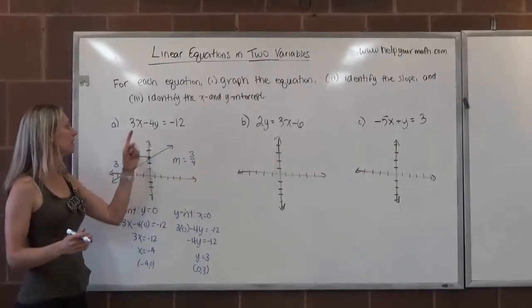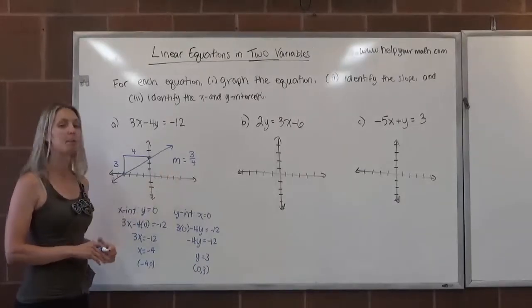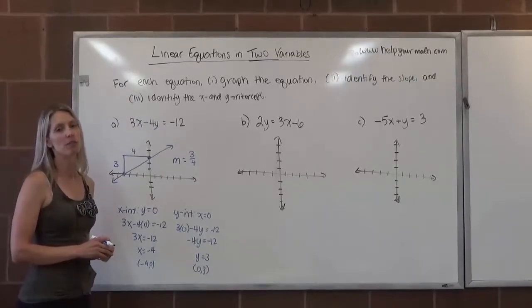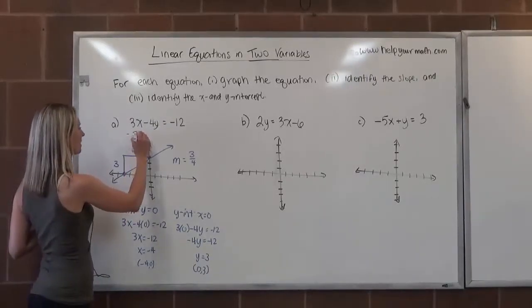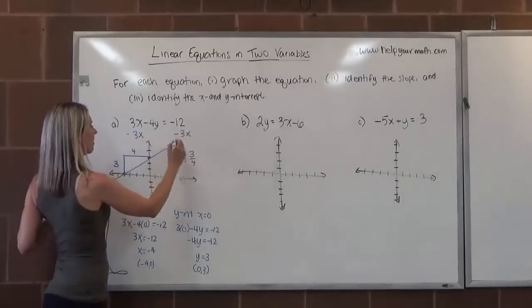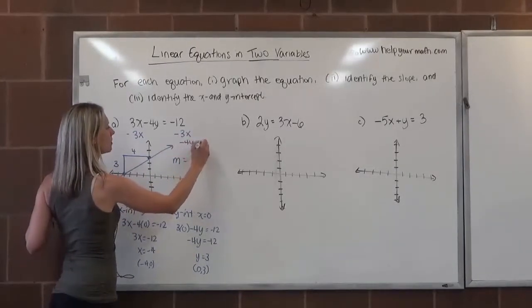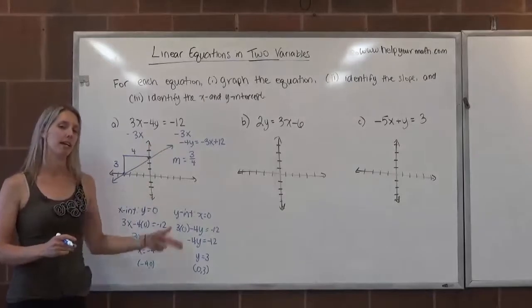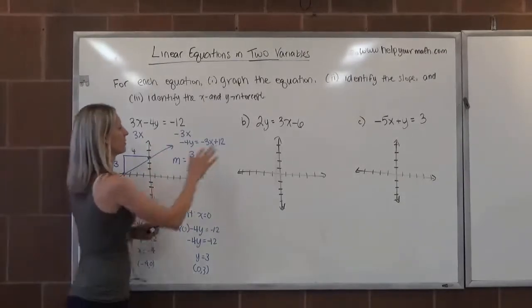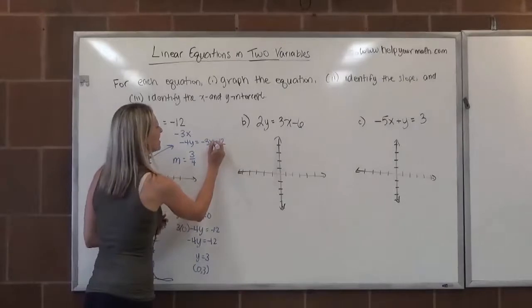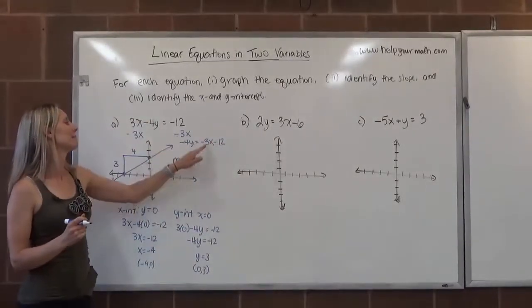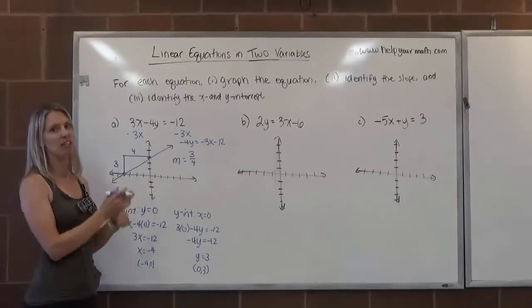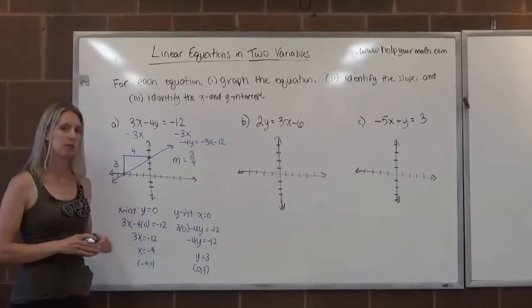Just to compare, let's rewrite this equation in slope intercept form and verify that we do end up with a slope of 3 fourths. To get this into slope intercept form, we want to get y by itself. To get y by itself, we're going to take away 3x from both sides. So that would give us negative 4y equals negative 3x minus 12. Notice when I wrote the right-hand side, I did move the negative 3x to be in front of the 12. It's fine if you switch them, but sometimes students get confused and we just want to make sure that that variable is listed first.